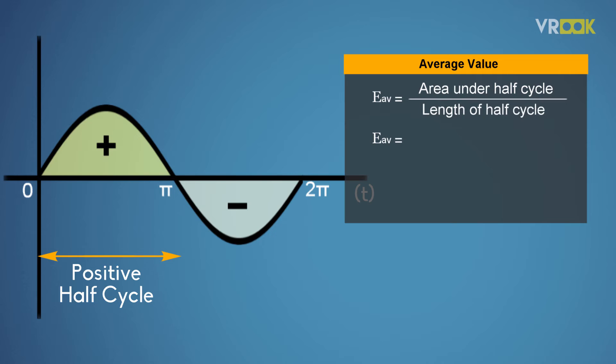So area of half cycle is 2EM obtained by integration. Therefore, EAV is equal to 2EM by pi, which will give us 0.637EM. Similarly, average current value IAV will be 0.637IM.